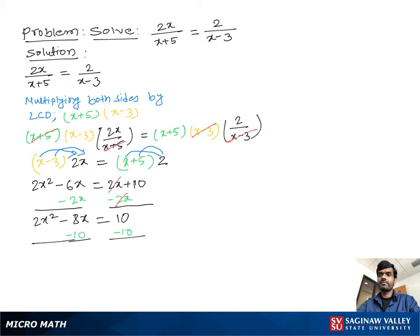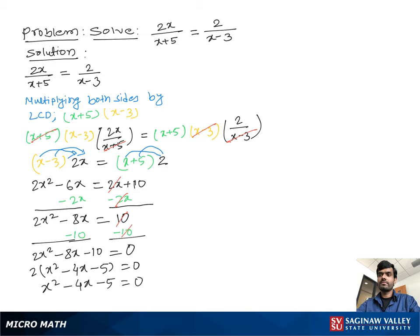We subtract 10 from both sides to get 2x squared minus 8x minus 10 equals 0. Taking 2 as a factor gives x squared minus 4x minus 5 equals 0. Factoring, we get x plus 1 times x minus 5 equals 0, so x is equal to negative 1 or x is equal to 5.